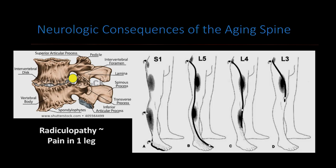Depending on which nerve is pinched determines where you may have pain in your leg. The S1 nerve, pinched between L5 and the sacrum, causes pain down the back of your thigh, your buttock, back of your calf, and to the bottom of your foot. L5 causes pain in the outside of the hip, thigh, calf, and top of the foot. L4 can cause front thigh pain, front of the knee, and inside of the shin. L3 causes pain in the front of the thigh. Higher up, T12 or L1 is more groin pain.